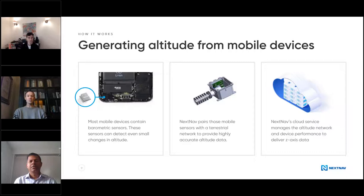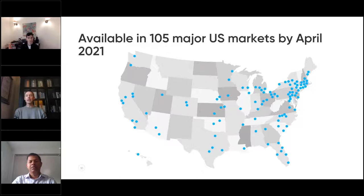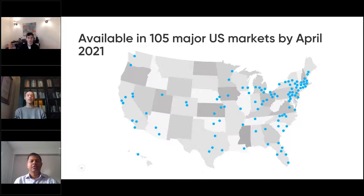In terms of where that altitude measurement is available, we're rolling this solution out in 105 major U.S. markets by April next year. Most of these are actually live today. There are just a couple of larger markets we're working to bring online, and we're even a little ahead of schedule. Many of the major markets are already online, ready to go, even as we speak.